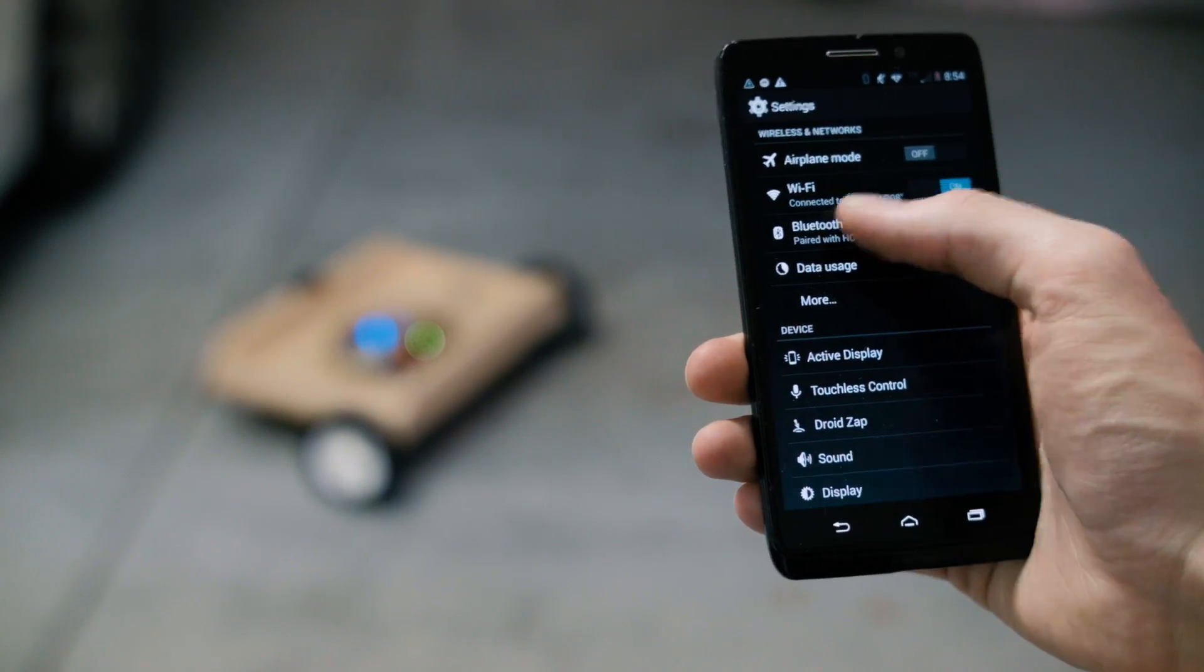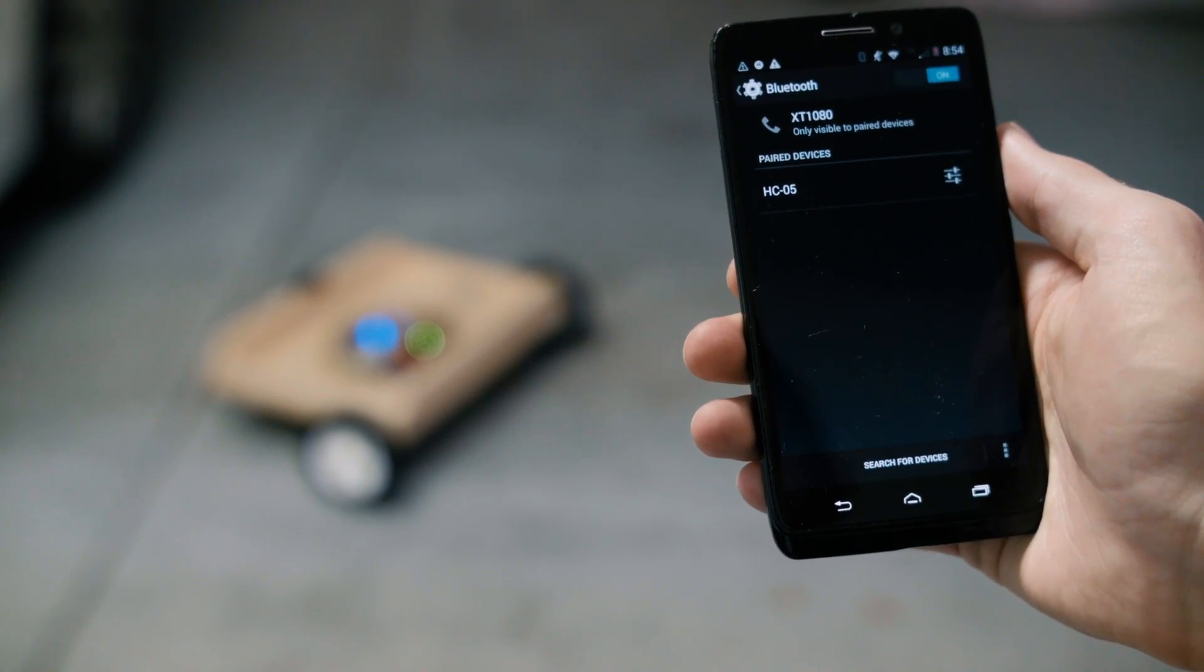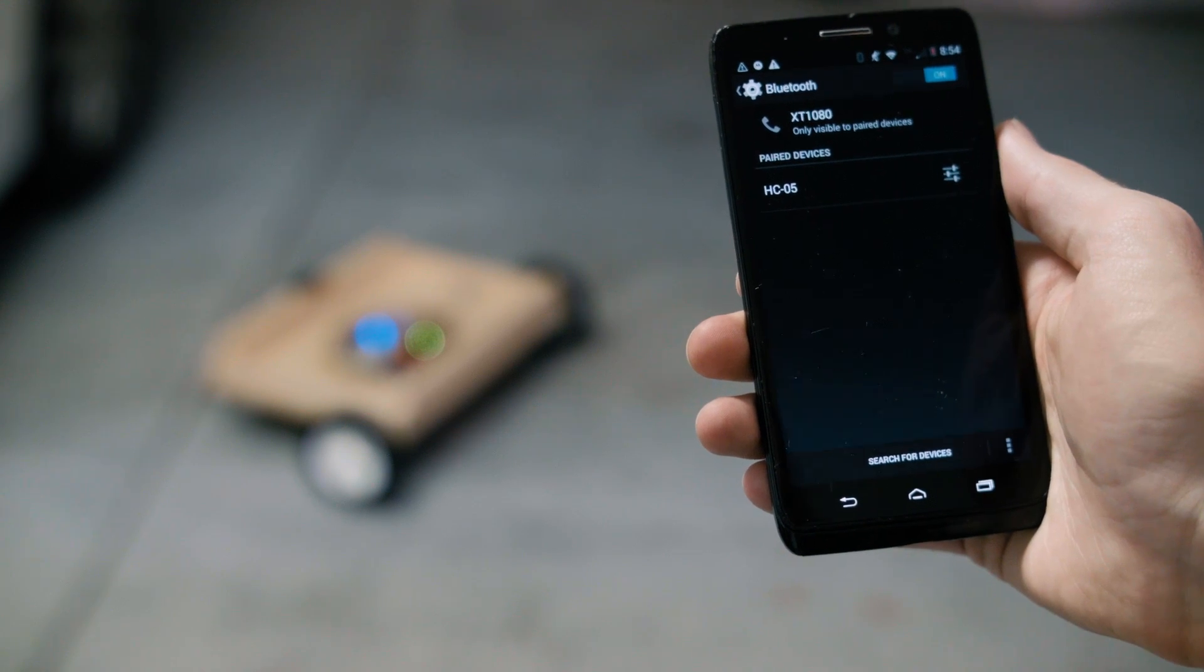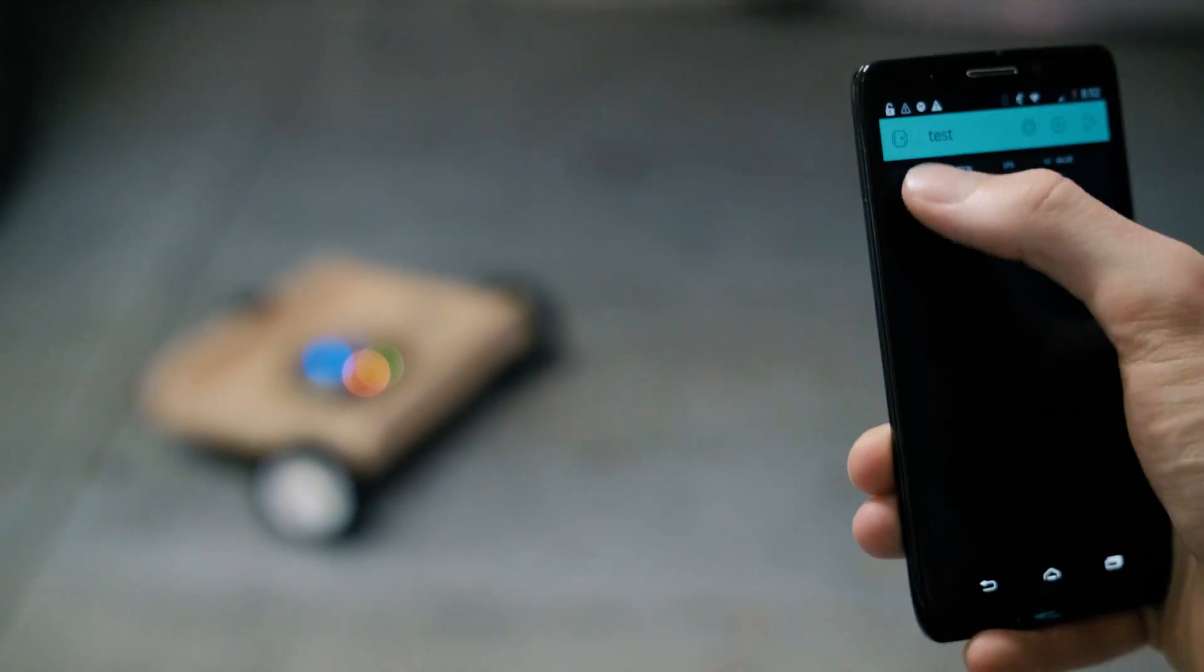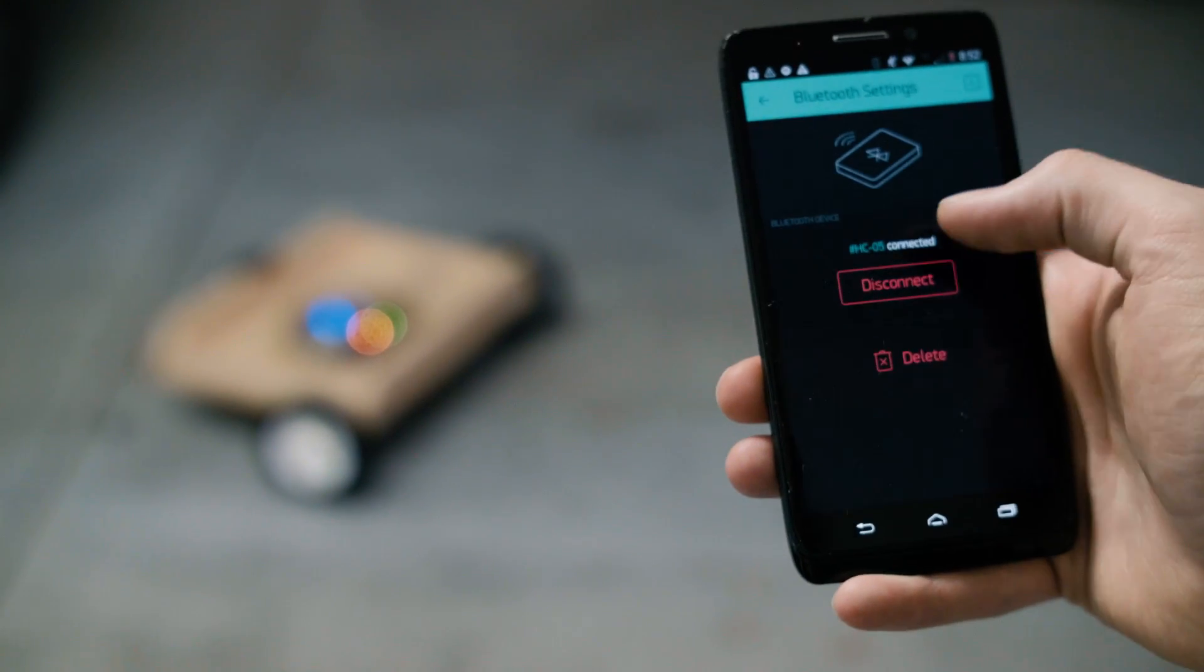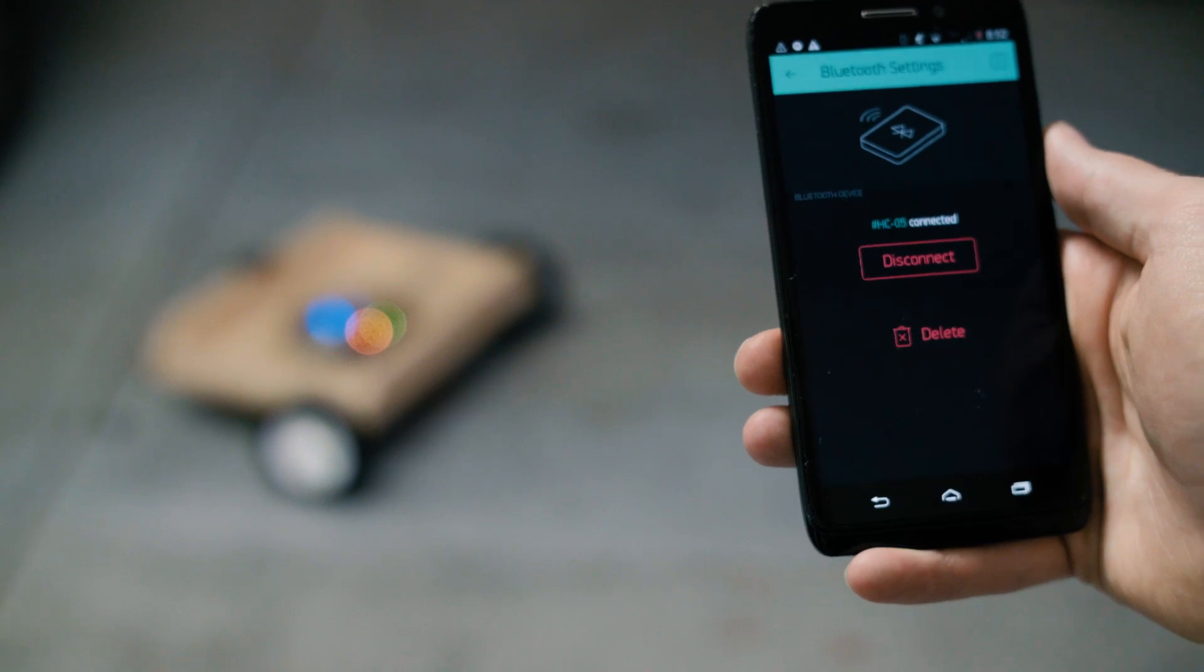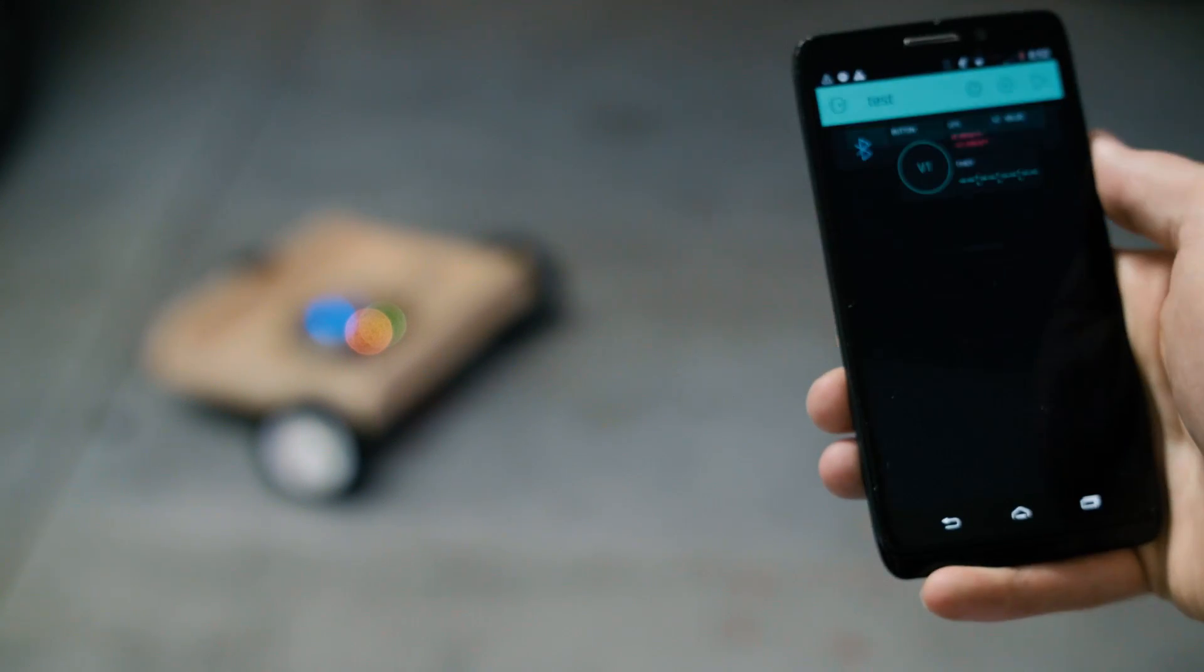When connecting Bluetooth, you want to go to the settings and make sure you have the Bluetooth module paired with your Android device. Then when you start blink, you want to make sure that you select the Bluetooth component in blink and make sure that you also connect to the module in blink.